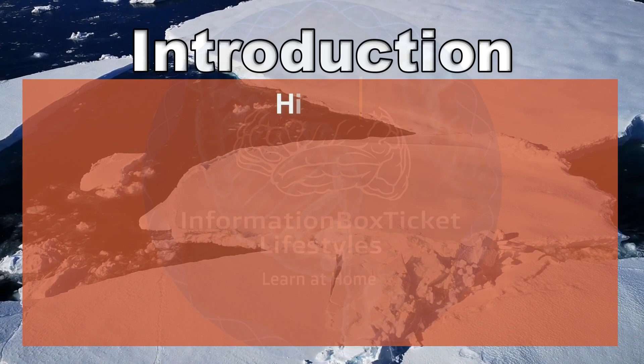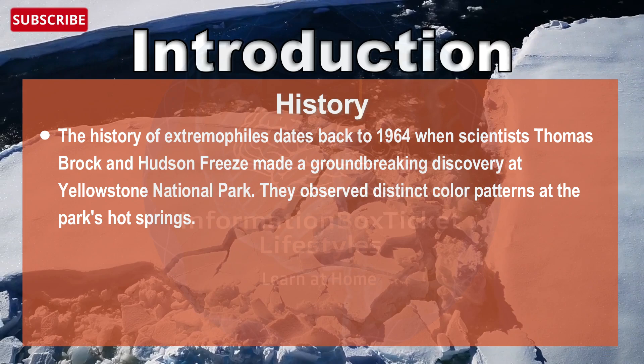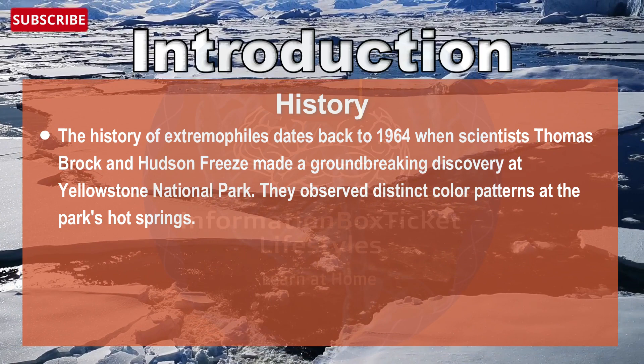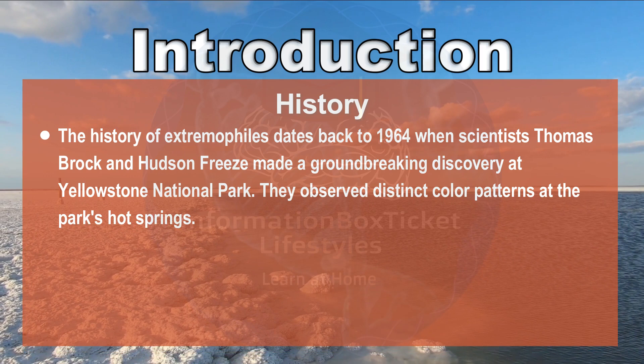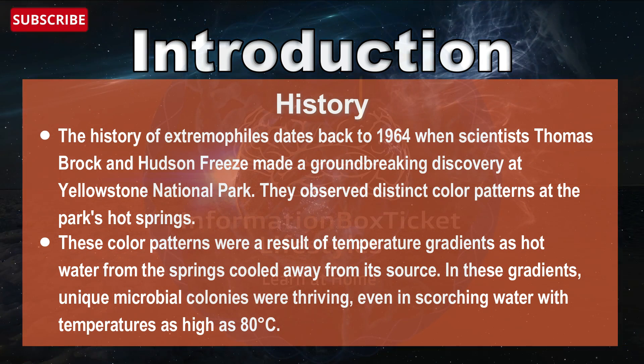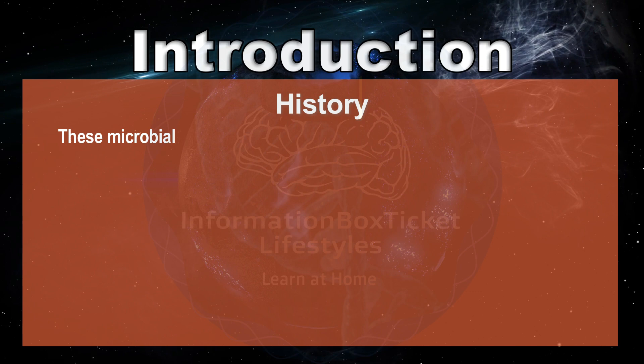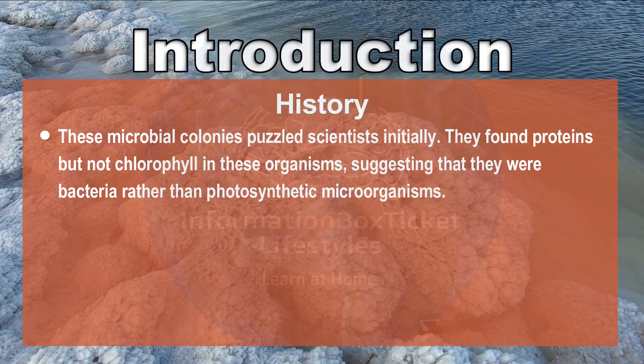The history of extremophiles dates back to 1964 when scientists Thomas Brock and Hudson Freeze made a groundbreaking discovery at Yellowstone National Park. They observed distinct color patterns at the park's hot springs, which were a result of temperature gradients as hot water cooled away from its source. In these gradients, unique microbial colonies were thriving even in scalding water with temperatures as high as 80 degrees Celsius. These microbial colonies puzzled scientists; they found proteins but not chlorophyll, suggesting they were bacteria rather than photosynthetic microorganisms.